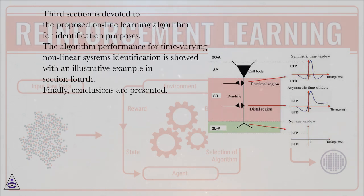Third section is devoted to the proposed online learning algorithm for identification purposes. The algorithm performance for time-varying non-linear systems identification is shown with an illustrative example in section 4. Finally, conclusions are presented.